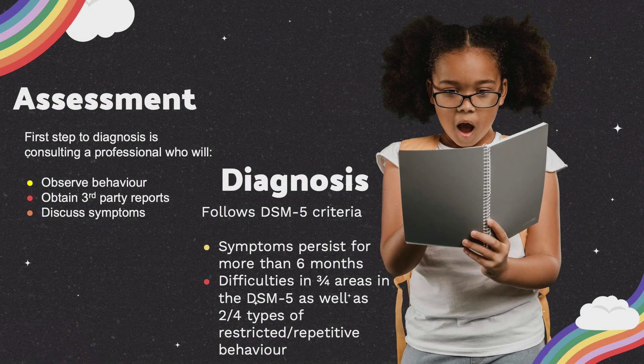Assessment and diagnosis of autism is very similar to OCD. However, the diagnostic criteria is specific to autism. In order to be diagnosed with autism, the person's symptoms must persist for more than six months. They must also display difficulties in three of the four areas defined in the DSM-5 and two of the four types of restrictive and repetitive behaviors.